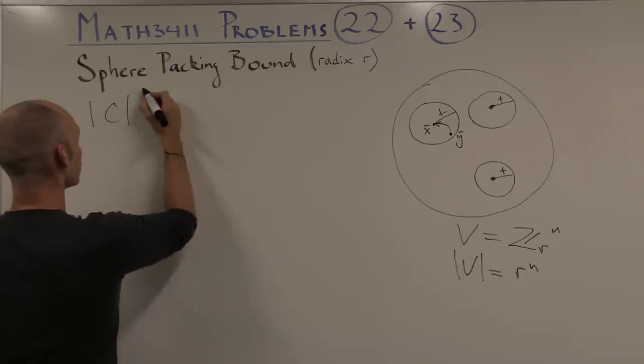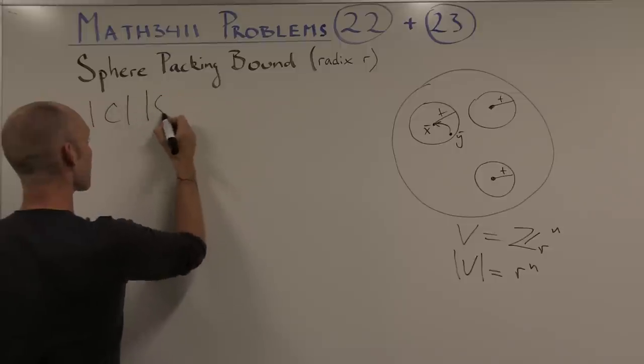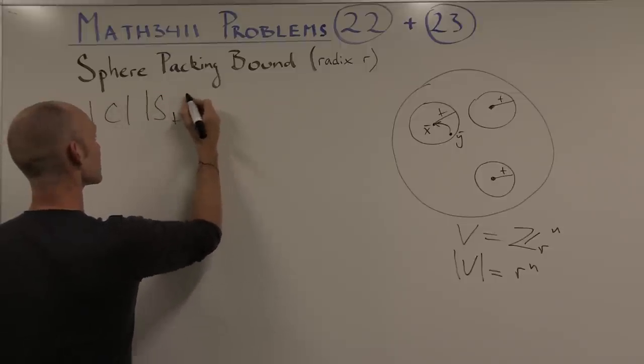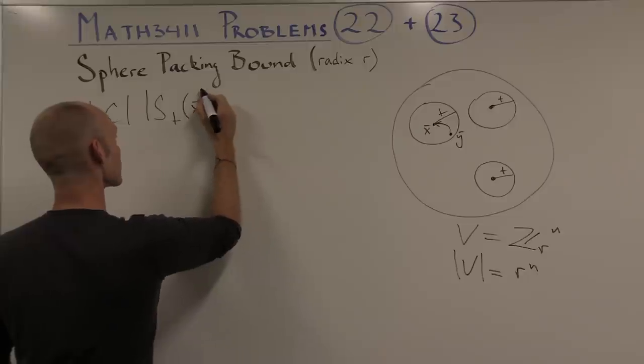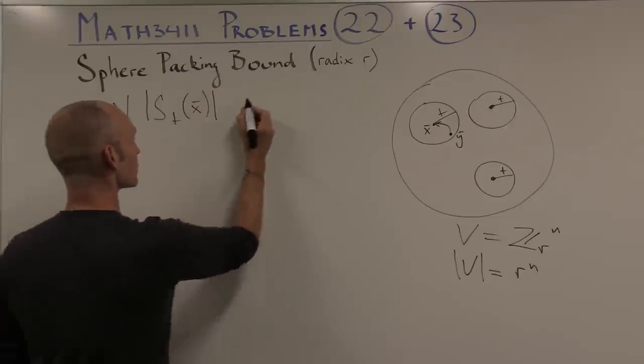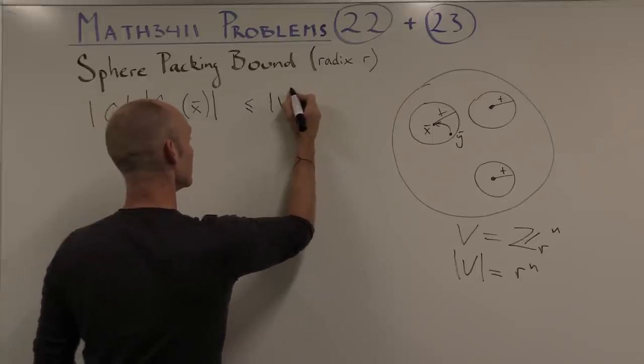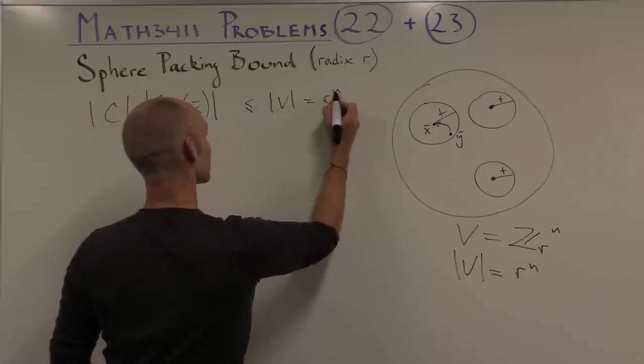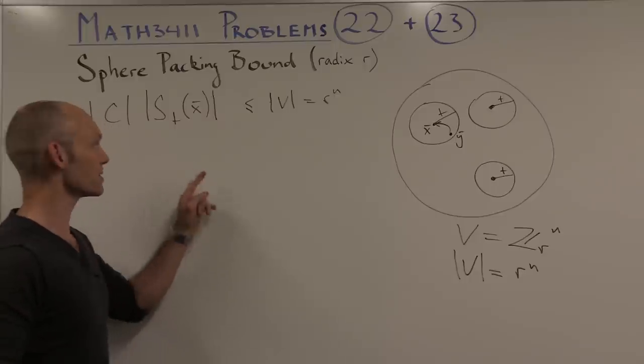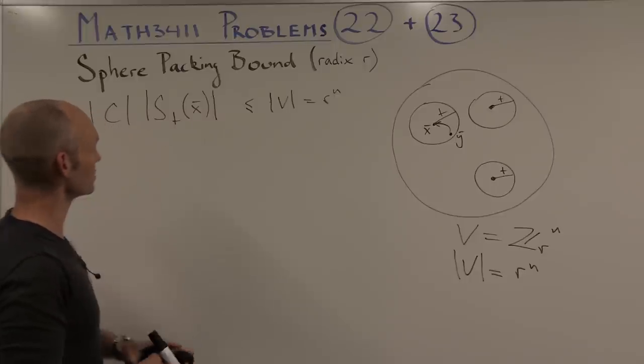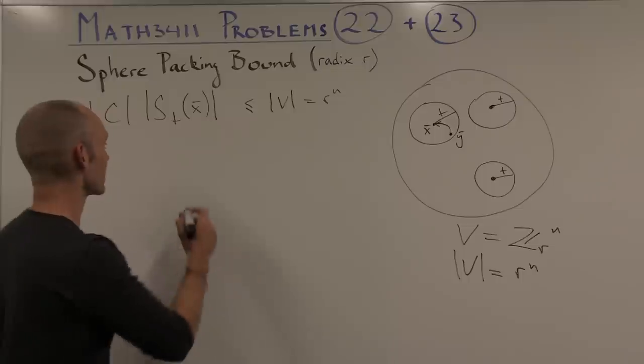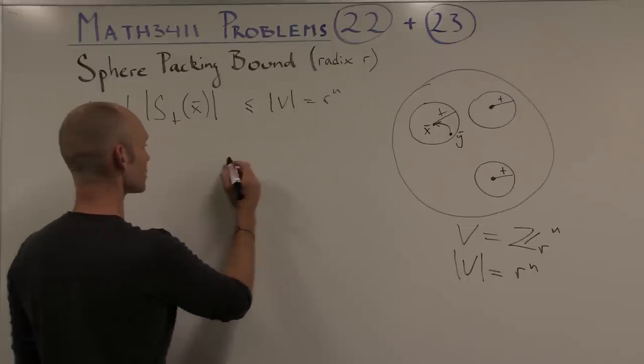So all we have to do is multiply the number of codewords by the volume around any particular codeword, and that will give us the sphere-packing bound. We're almost done, we just have to find out what this volume actually is equal to.